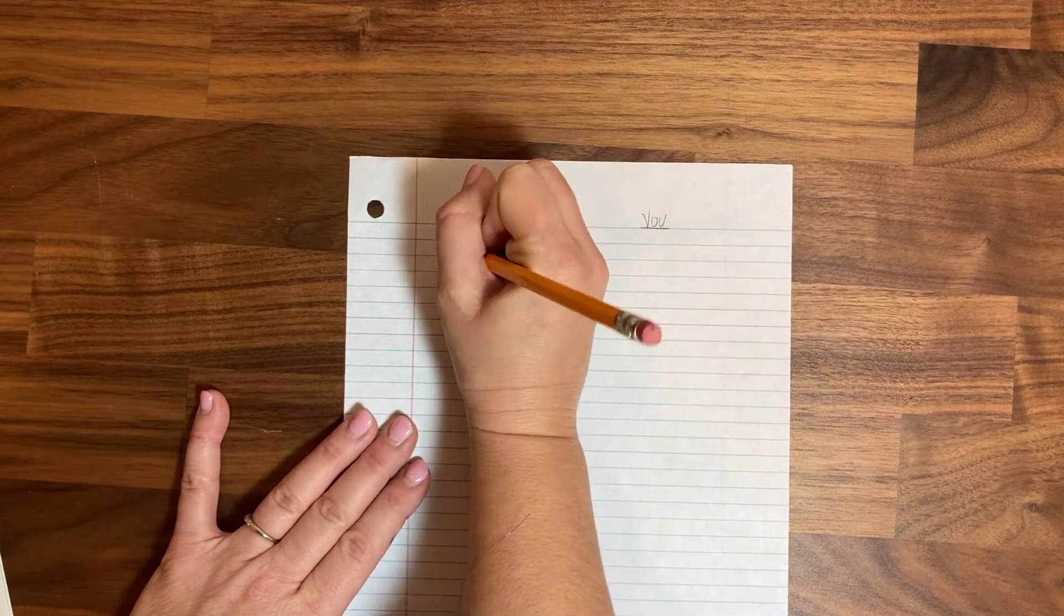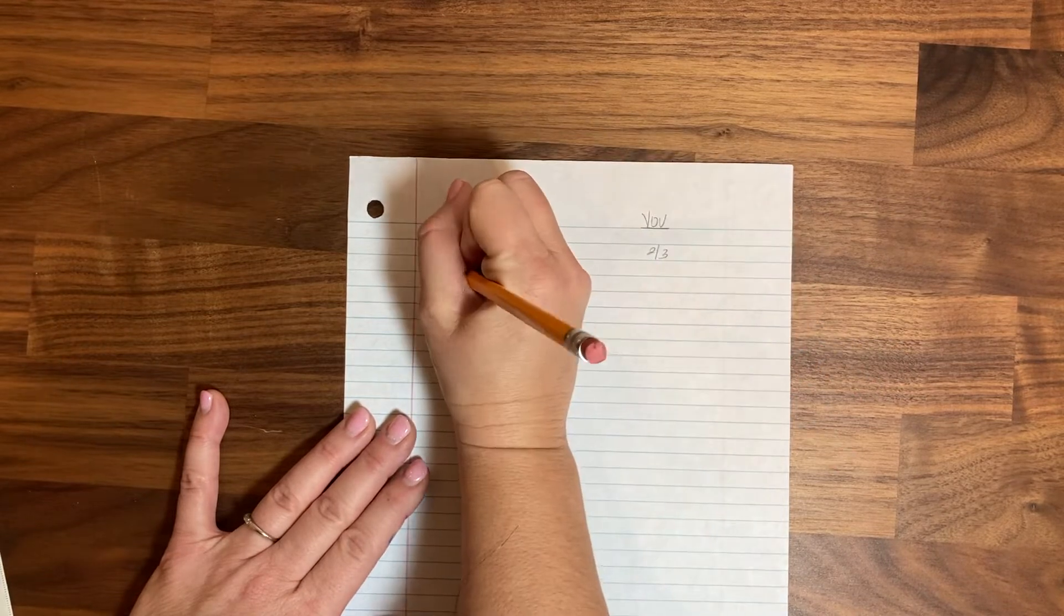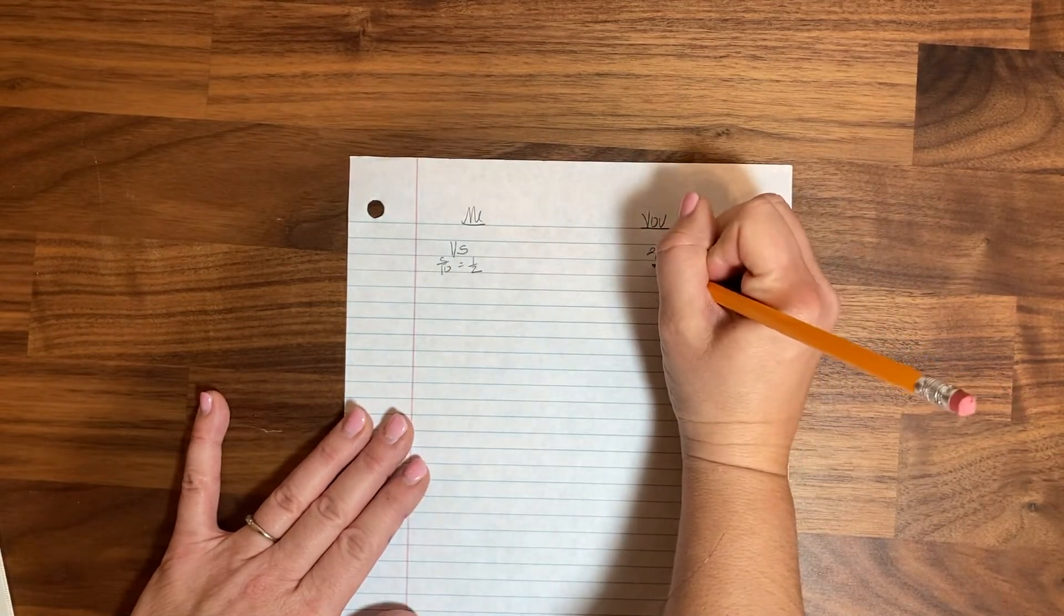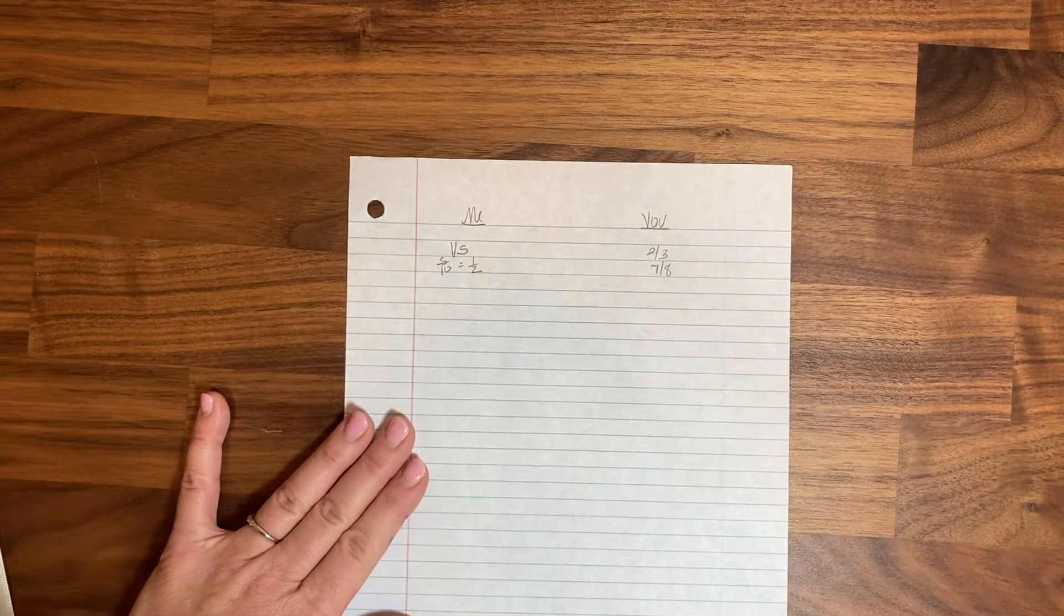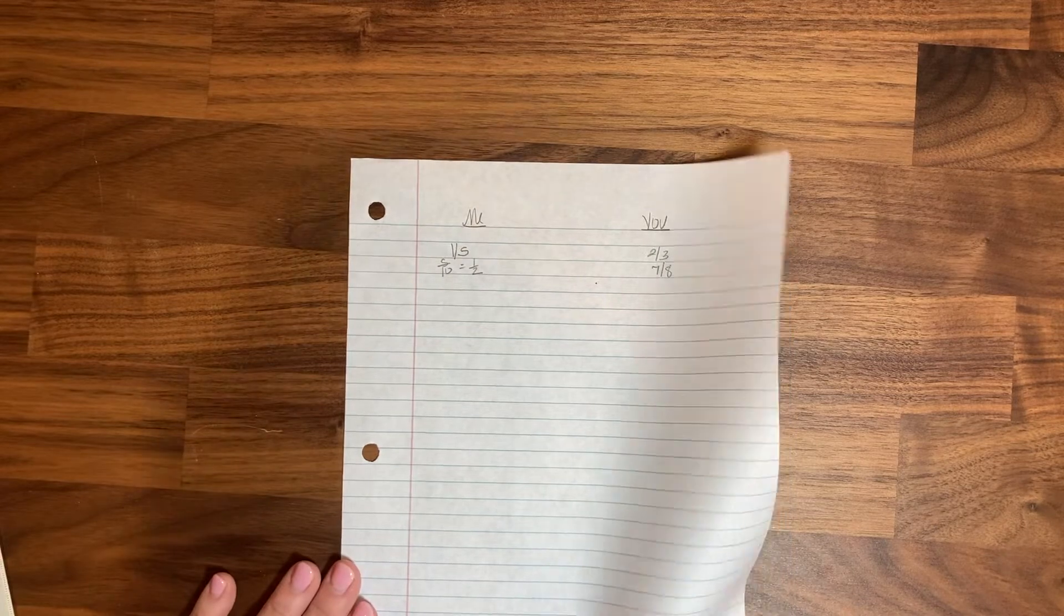Let's say I had one-fifth, and then you had two-thirds, and then I had five-tenths, which I said was one-half, and then you had seven-eighths. You just keep record, and all they do is turn that in, and that just helps you know that they were on task. I don't ever grade anything like that, and I don't actually use anything like that most of the time, but sometimes a certain pair will need it.